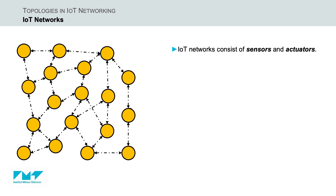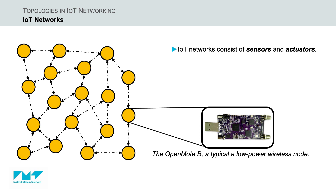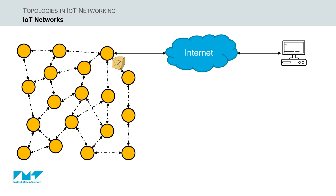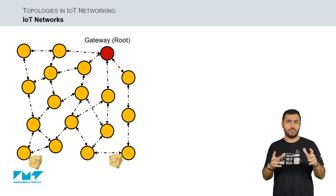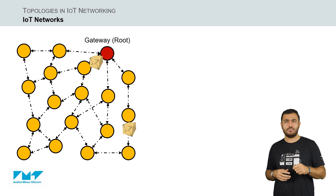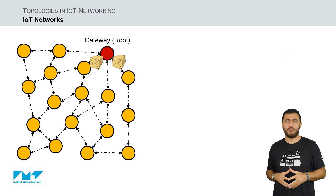More specifically, IoT networks consist of sensors and actuators that operate in a given field. These constrained sensor and actuator nodes are able to communicate among each other and possibly also with external devices on the wider Internet. A very intuitive network arrangement is a set of nodes that collect environment measurements and send these measurements to a gateway, often called a border router.